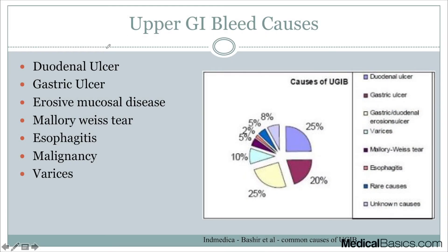When I think of upper GI bleed as well as lower GI bleed, I break it down into three categories: inflammatory, any type of structural cause, as well as any type of vascular cause.